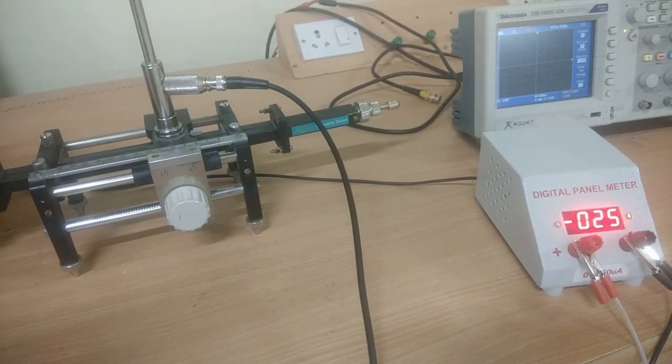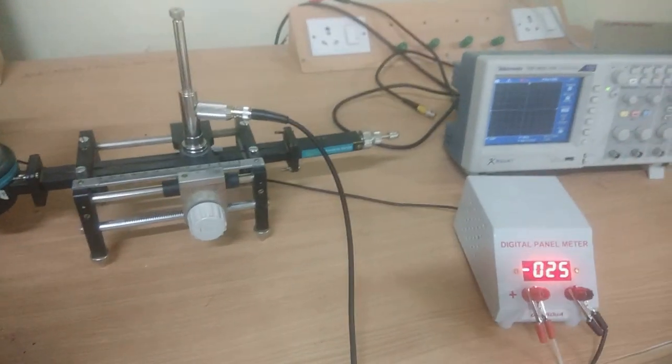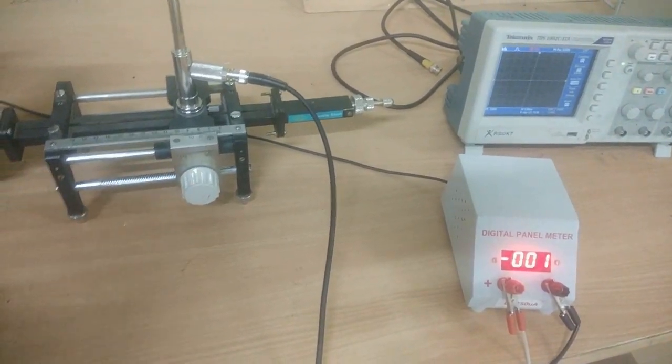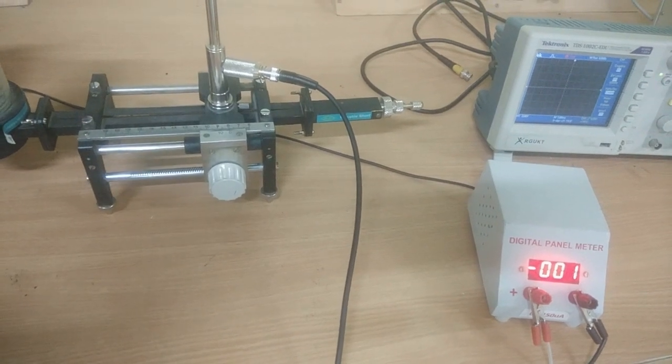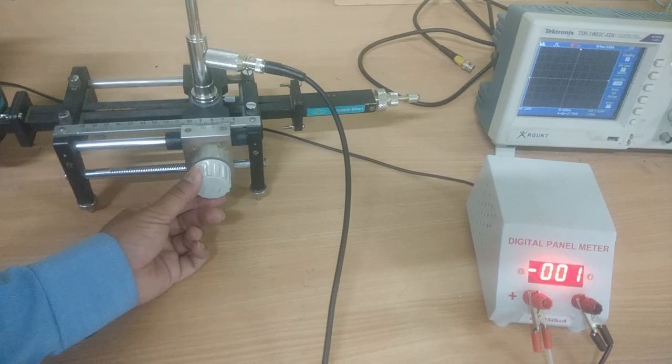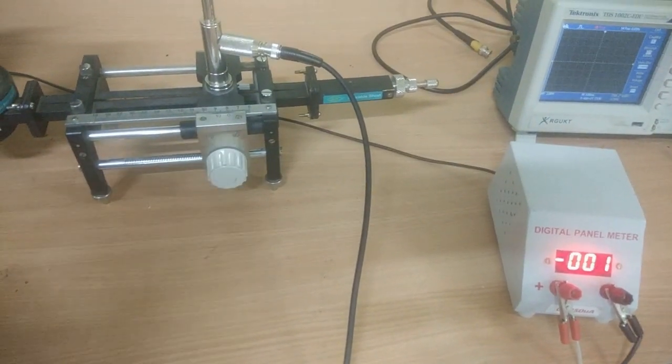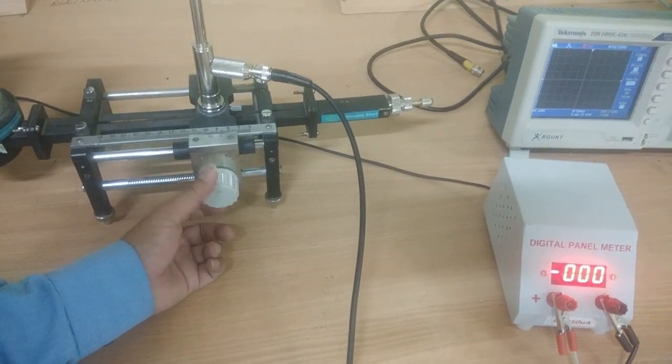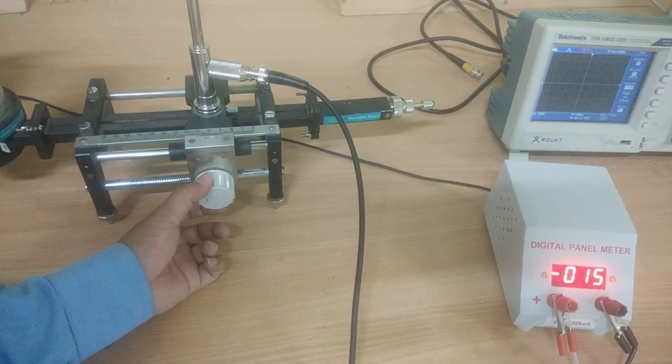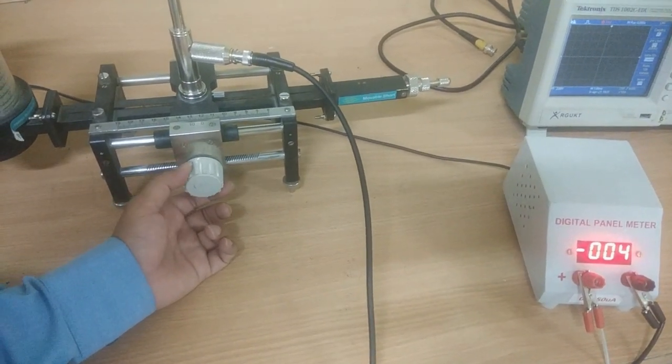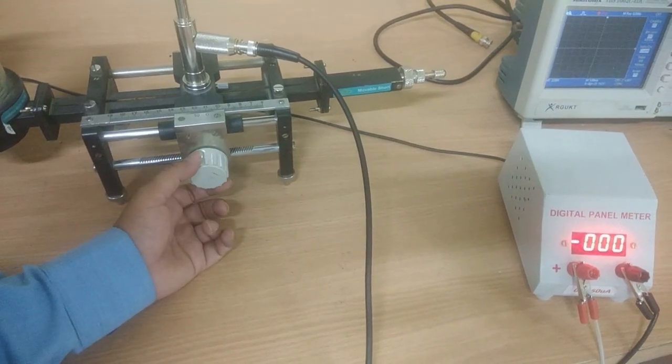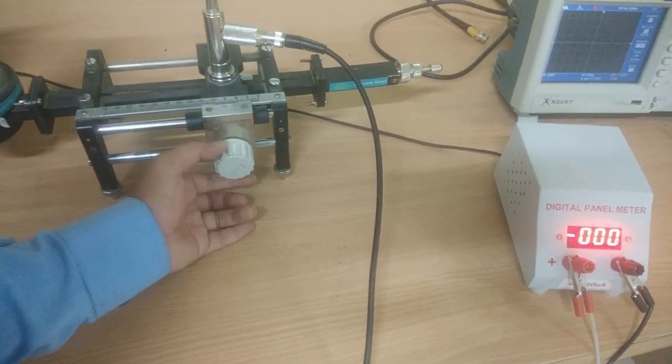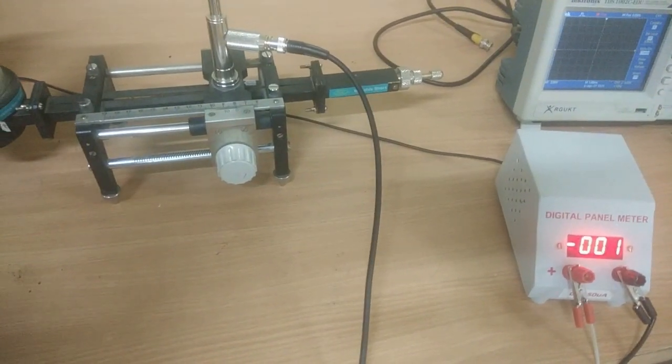Coming to the slotted line section, the tunable probe needs to be kept at the rightmost position. Then we have to rotate slightly towards the generator. When we are rotating this tunable probe along the slotted line section, we will get successive maxima and minima. We have to take any two successive maxima or minima from this slotted line.